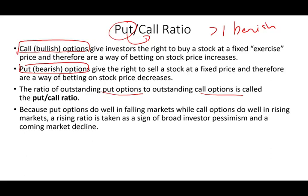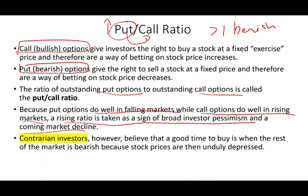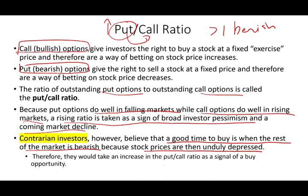Put options do well in a falling market while call options do well in a rising market. A high put/call ratio is taken as a sign of broad investor pessimism and a coming market decline. Contrarian investors, on the other hand, believe it's a good time to buy when the rest of the market is bearish — stock prices are unduly depressed and present a buying opportunity. It depends on how you interpret these signals; the most important thing is understanding the basics.